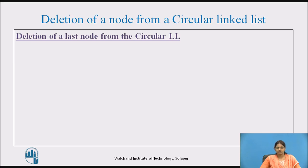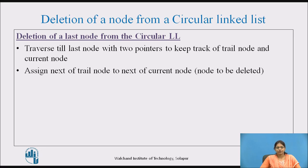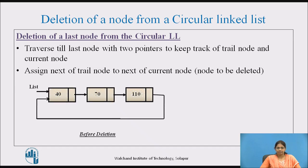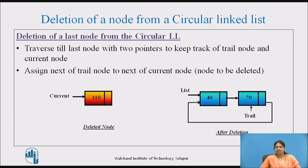For deletion of the last node from the circular linked list, we need to traverse till the last node using two pointers to keep track of the trail node and the current node. Then we assign the next of trail to the next of current — the node to be deleted. In the example, the node with value 110 is to be deleted. Trail points to the previous node and current points to the node to be deleted. Assigning trail's next to current's next deletes the node with value 110. The deleted node is pointed by current, and this is the updated linked list.